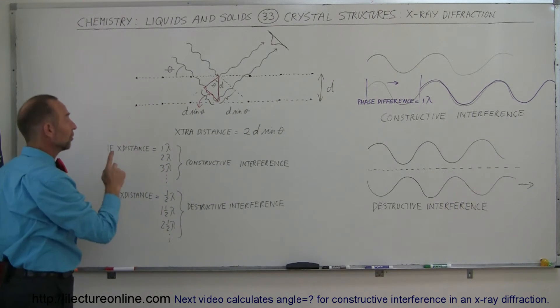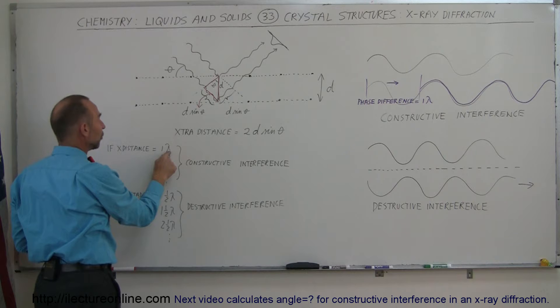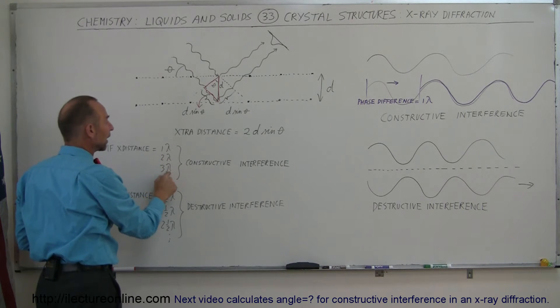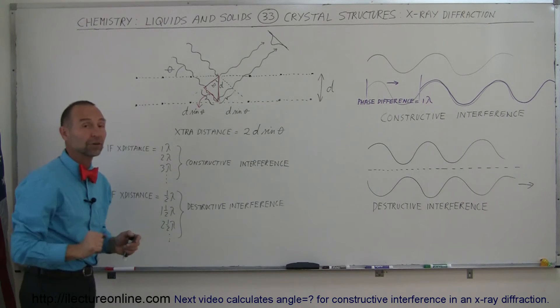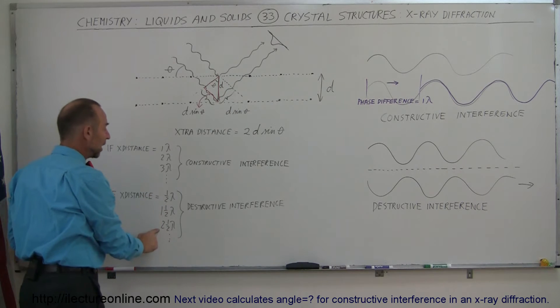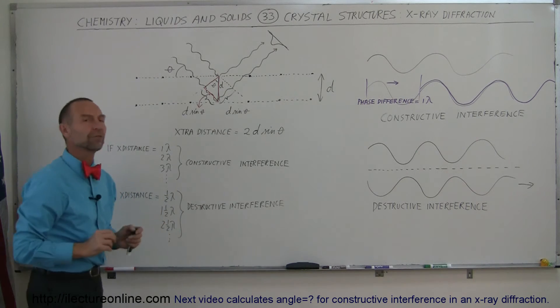Now, if that extra distance is equal to a full wavelength or two wavelengths or three wavelengths, you have constructive interference. If it's equal to a half a wavelength, one and a half or two and a half, you have destructive interference.